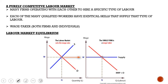In a purely competitive labor market, you have many firms competing with each other to hire a specific type of labor. Each of the many qualified workers have identical skills that supply that type of labor, and both firms and individuals are wage takers. The labor market as a whole has a downward sloping demand curve and an upward sloping supply curve. Where they intersect — at equilibrium — that determines the wage rate and quantity. A single firm is a wage taker, using the equilibrium wage determined by the market. The supply is perfectly elastic because they are wage takers and cannot change the wage rate, and they have a downward sloping demand curve.